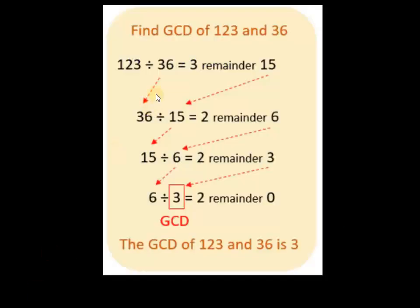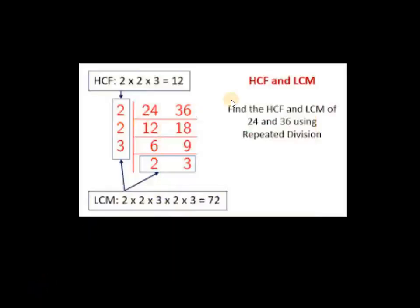Let's see one example. I hope everyone knows what GCD and LCM are. In primary school, we used to find HCF and LCM this way. Given two numbers are 24 and 36. You have to find the highest common factor and lowest common multiplier. 2×12=24, 2×18=36, 2×6=12, 2×9=18, 3×2=6, 3×3=9. These are the common factors — multiply them: 2×2×3 gives the GCD or HCF, which is 12. Multiplying all factors gives LCM = 72.